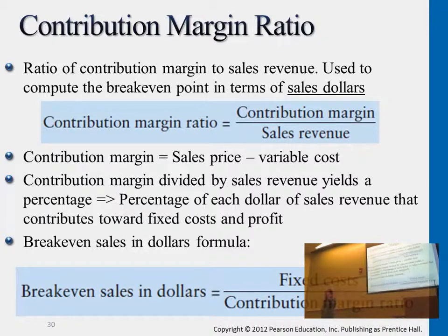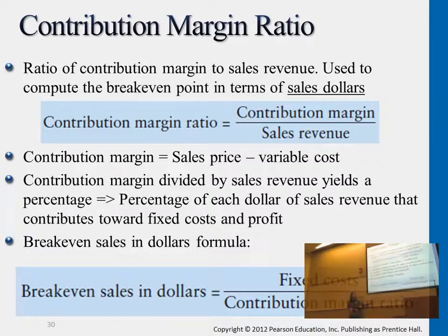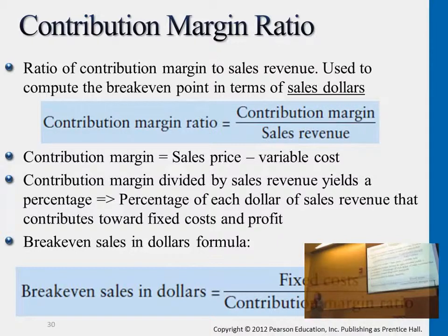The first formula is really just contribution margin divided by sales revenue, which gives us per dollar of sales how much we're getting as contribution margin. So if contribution margin ratio is 0.6, that means 0.4 is the fixed cost portion at the break-even point. The larger this 0.6 is, the more we're able to cover fixed cost. We want to know how many 0.6s we need to cover the $12,000. This gives us break-even sales in dollars — the amount we need to make in order to not have a loss.